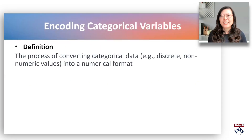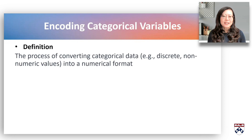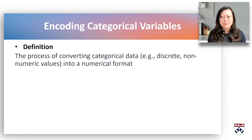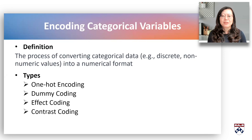Categorical data takes on discrete, non-numerical values representing categories or groups. Encoding categorical variables is a process of converting categorical data into a numerical format that can be used as input for analysis. It has four types: one-hot encoding, dummy coding, effect coding, and contrast coding.